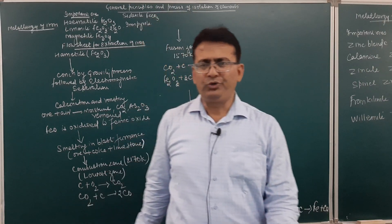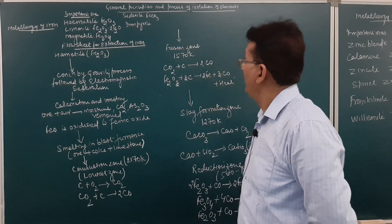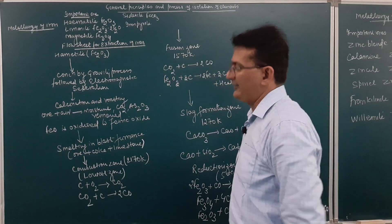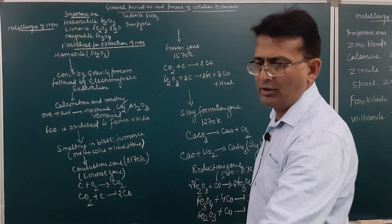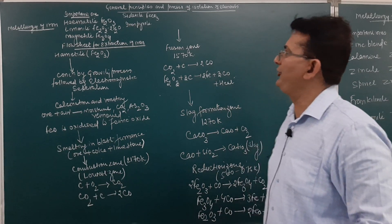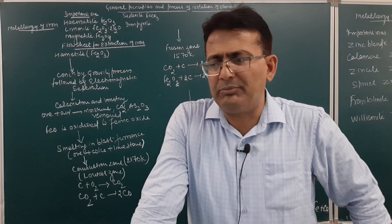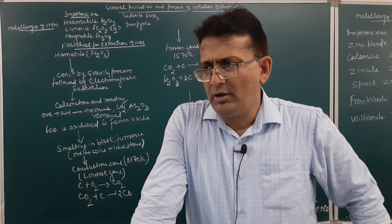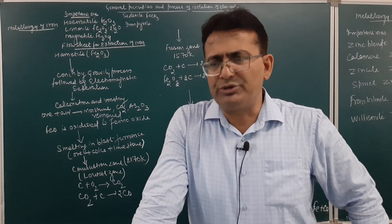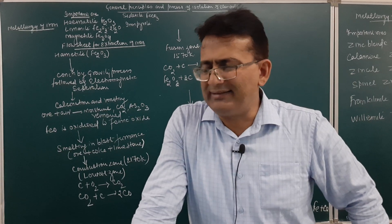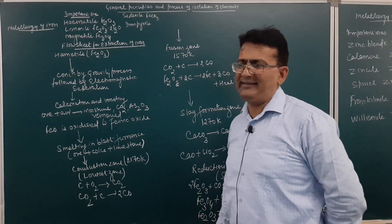Good morning, students. In our previous video, in this chapter of General Principles and Process of Isolation of Elements, we discussed the various steps used to obtain the metal from its ore — the metallurgical extraction of a metal using certain steps discussed in previous videos. Based on that, today in this lecture we will discuss the metallurgy of iron and zinc.